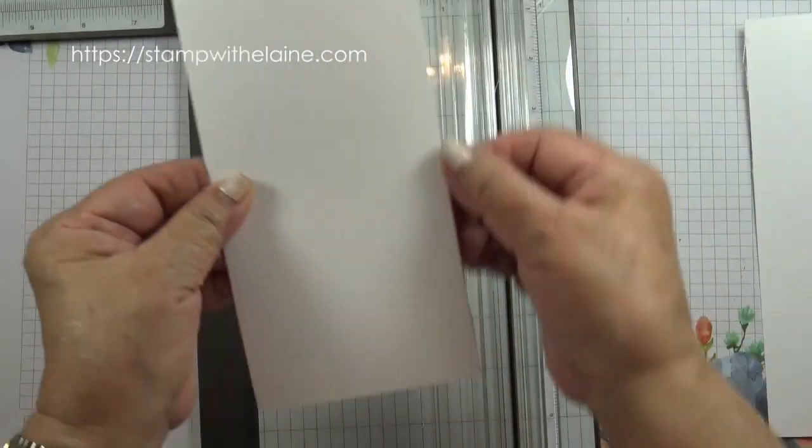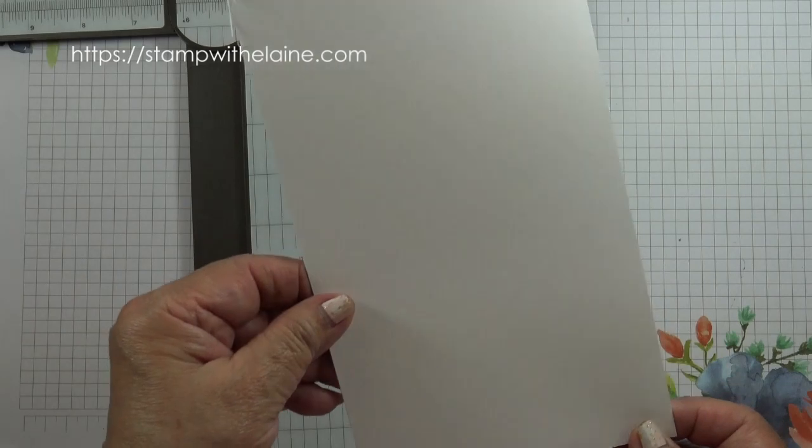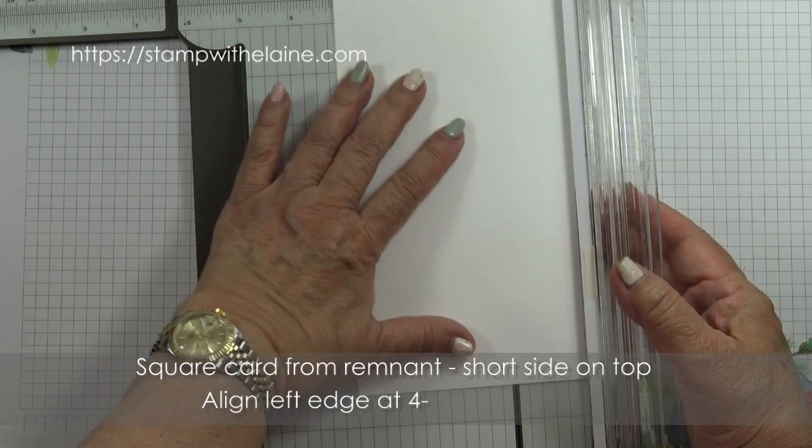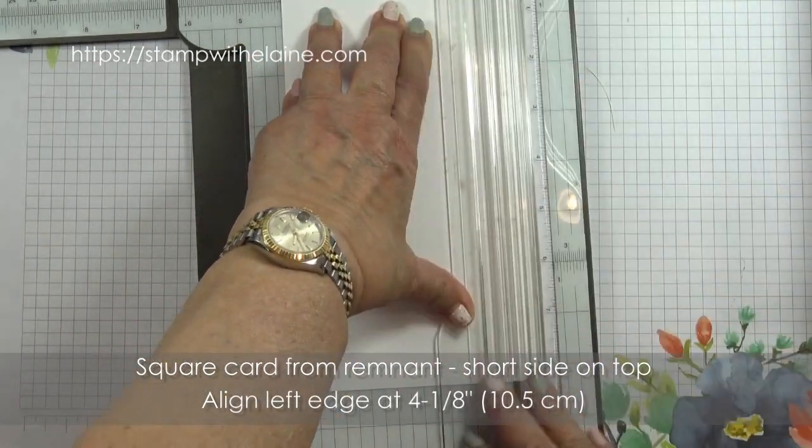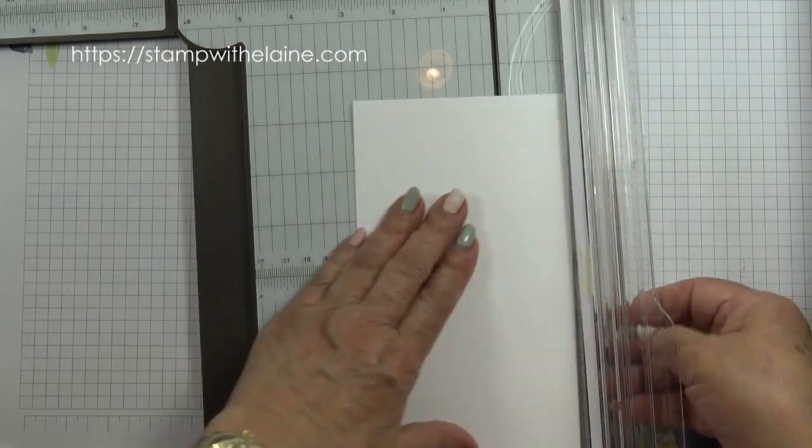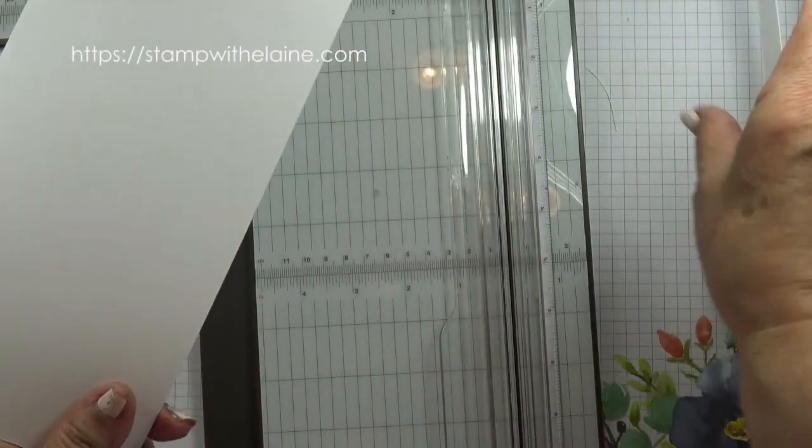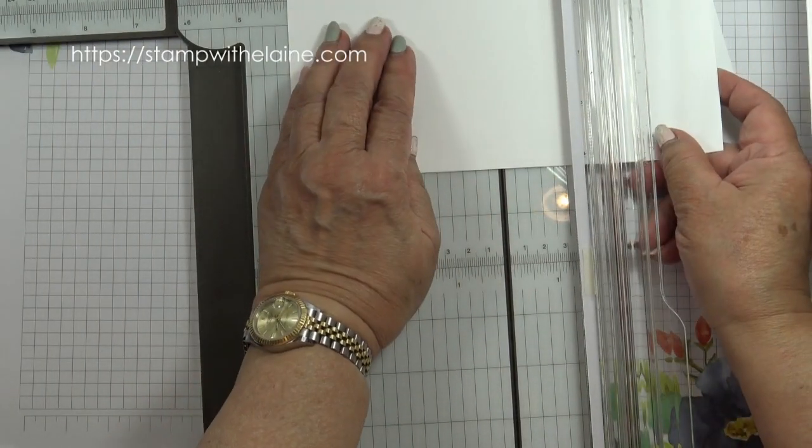So there's your long slim card. Now you've got this piece that's left over, so trim it to four and one eighth.